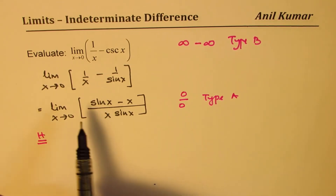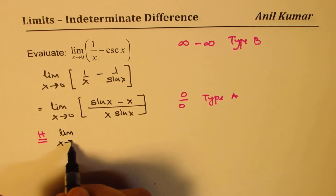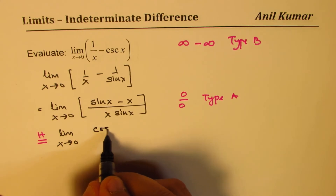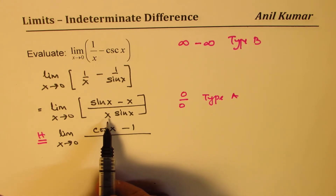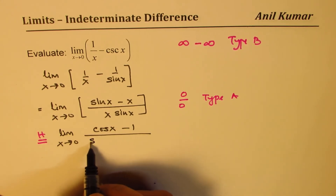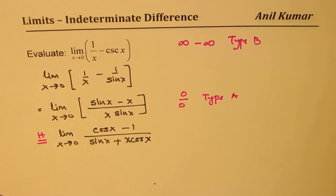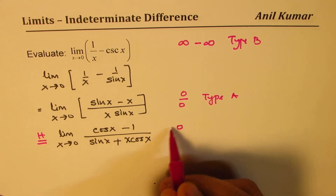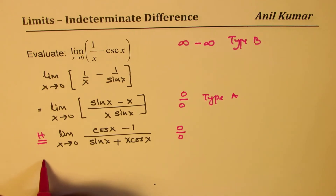Applying L'Hopital's rule, we find the derivatives. The derivative of sin x is cos x and that of x is 1, so the numerator becomes cos x minus 1. For the denominator, applying the product rule gives sin x plus x cos x. If we substitute 0, the numerator gives 1 minus 1 which is 0, and the denominator gives 0 plus 0 which is also 0, so we need to apply L'Hopital's rule once again.